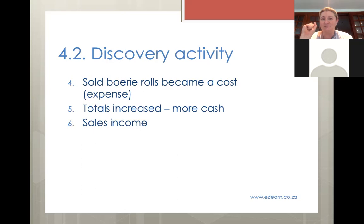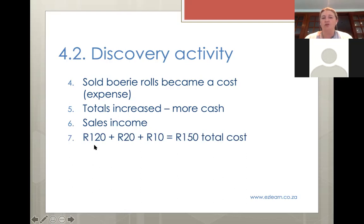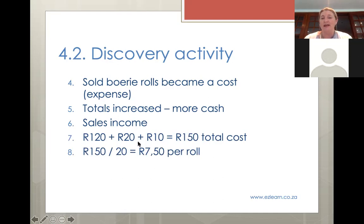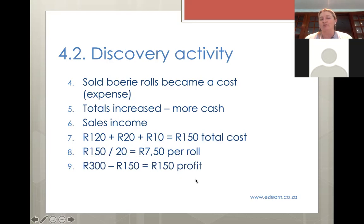Over here you can see your total cost was your actual boerewors, your rolls, and your serviettes. You could work out the actual cost per roll by dividing by the 20 rolls that you made. You can see that was the actual cost you had. So if you sold it at 15 rand, that means you ended up with 7 rand 50 profit per roll - in other words, 150 rand profit in total. The numbers support exactly what we were doing.